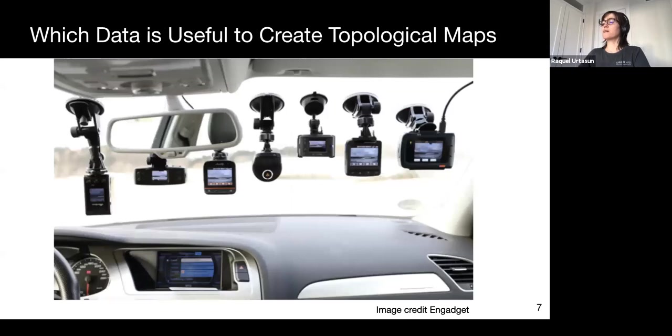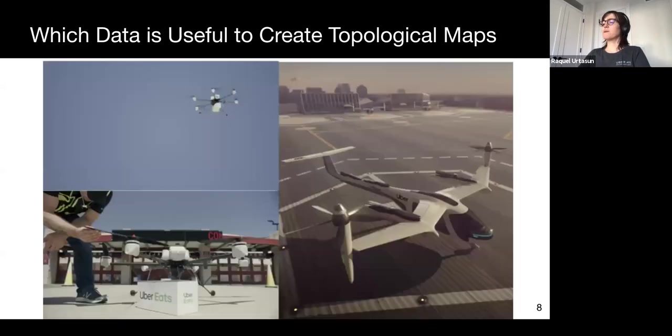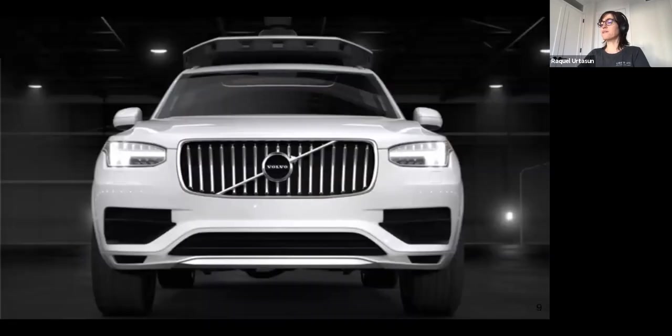There are many data sources that can be exploited to generate topological maps. Cameras mounted on windshields are available at scale, as many drivers use them for insurance purposes. Aerial images captured by drones, planes, and satellites can also be used. And of course, you can also use self-driving vehicles for this purpose.